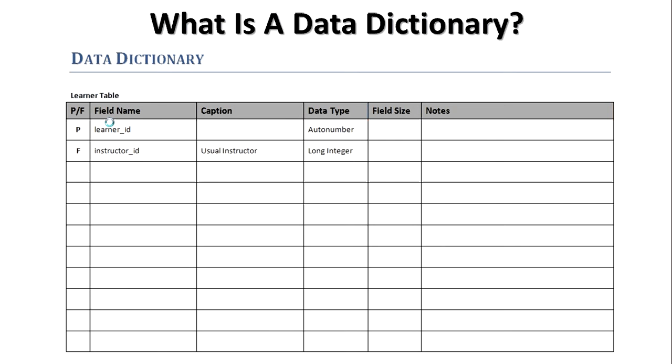The second field is our foreign key. That's the instructor ID. Remember this doesn't belong to the learner but it is something that the learner relates to the instructor. This is going to be the usual instructor. So you can see that's what I put in the caption. So the caption is what someone's going to see whenever they see this field. The data type for this is something called long integer. Now a long integer is a type of number. It needs to be a long integer because it's going to relate to the instructor ID in the instructor table which is going to be set up the same way that our learner ID is here.